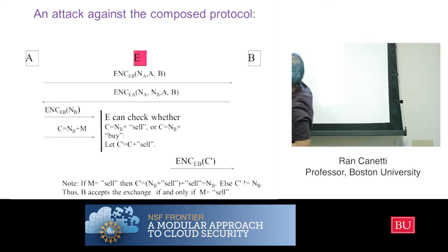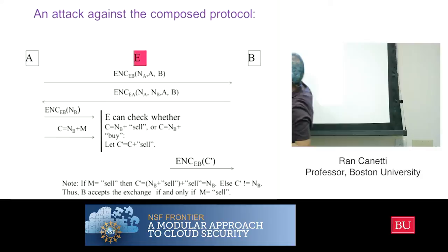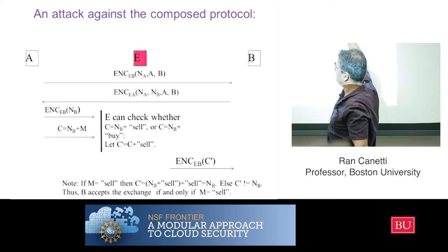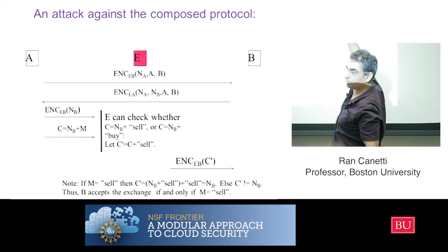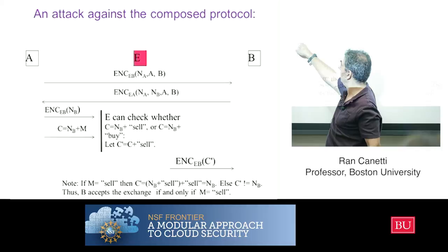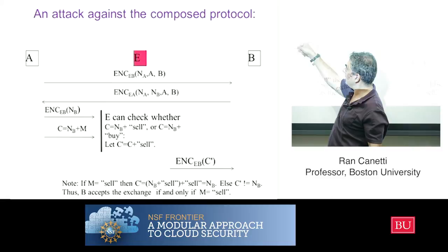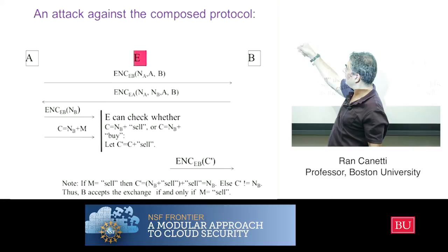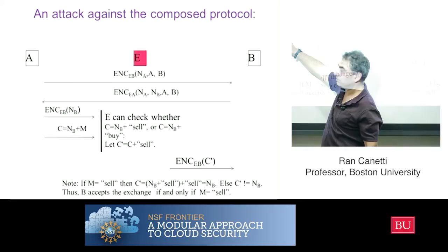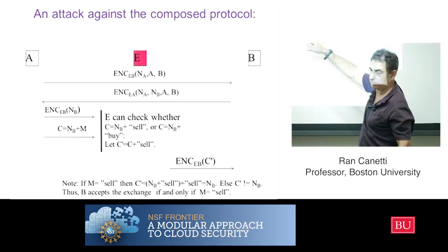What does the attacker do? He knows B is expecting an encryption of NB. If B gets an encryption of NB he'll be happy and continue; if he gets something else, he won't. The attacker has the ciphertext c = NB XOR M. If the adversary knows that M comes from a small set of messages, then each candidate value of M gives him a corresponding candidate value of NB. He can encrypt each candidate NB under B's public key and send it to B.